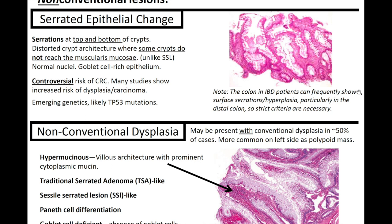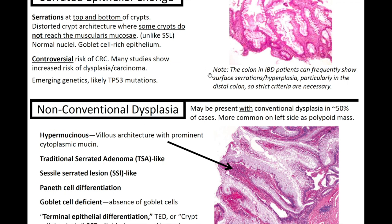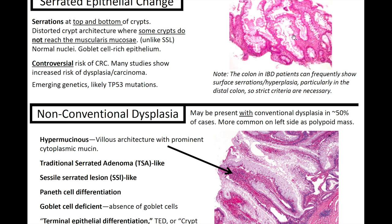You can also have non-conventional lesions in IBD, such as serrated epithelial change, where you have serrations at the top and bottom of the crypts, distorted crypt architecture where some crypts do not reach the muscularis mucosa — unlike a sessile serrated lesion — and normal nuclei with goblet cell-rich epithelium. There is controversial risk of colorectal carcinoma in serrated epithelial change, with many studies showing increased risk of dysplasia and carcinoma. To differentiate from an SSL, some crypts don't reach the muscularis mucosa. To differentiate a hyperplastic polyp from an SSL, look for dilation of the crypts down at the muscularis mucosa.